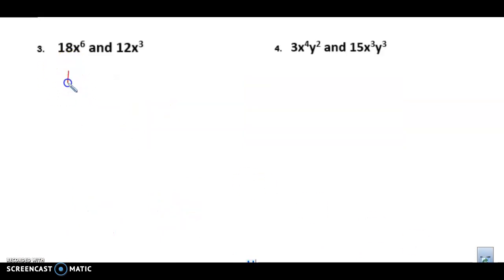If I have 18x to the 6th power and 12x to the 3rd power, my greatest common factor of 18 and 12, I know is 6. 6 will be the largest. And then I have 6x's here and 3x's here, so they share 3. So x cubed. It's been a while since I wrote with my board, you can tell.